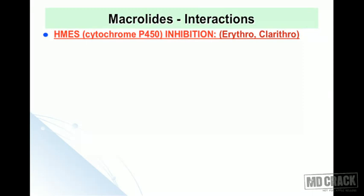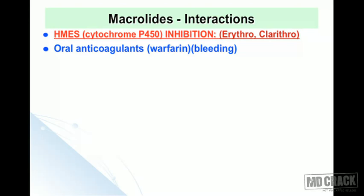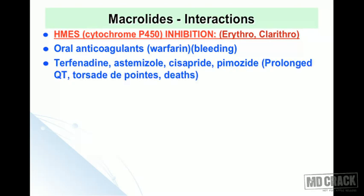Drug interactions: macrolides are potent inhibitors of the cytochrome P450 enzyme system, especially erythromycin and clarithromycin. Inhibition of hepatic microsomal enzymes decreases metabolism of other drugs, leading to excess or toxic effects. For example, oral anticoagulants like warfarin have inhibited metabolism, leading to bleeding. Drugs like terfenadine, astemizole, cisapride, and pimozide can prolong the QT interval and cause torsades de pointes arrhythmia and death.